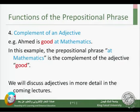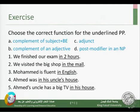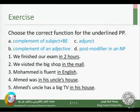Adjectives will be discussed in more detail in the coming lectures. Now let's look at this exercise: choose the correct function for the underlined PP. The options are: A — complement of subject plus be, B — complement of an adjective, C — adjunct, and D — post-modifier in an NP.